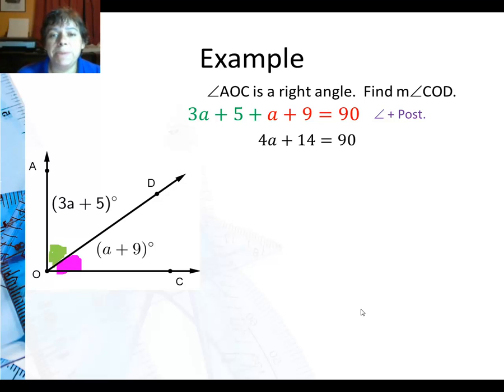Then I combine my like terms, and I get 4A plus 14 equals 90. Then subtract 14 from both sides from the subtraction property of equality. And I get 4A equals 76.